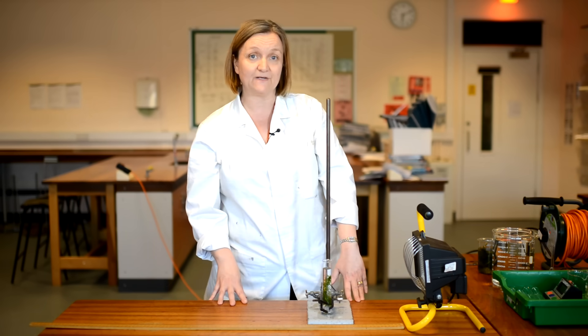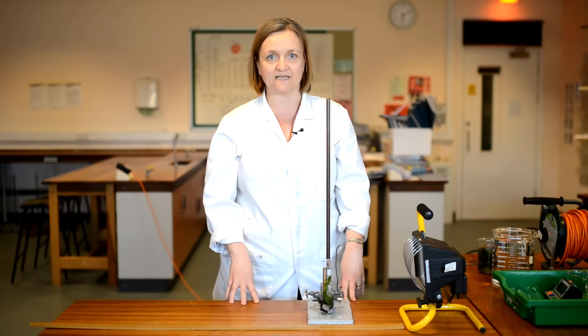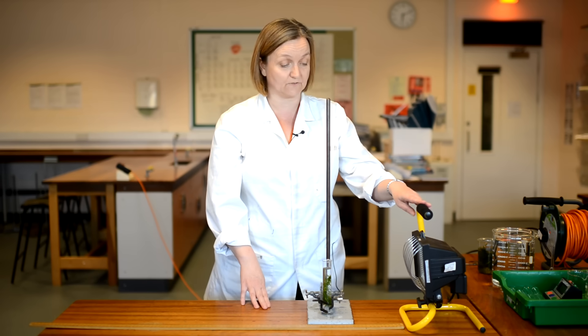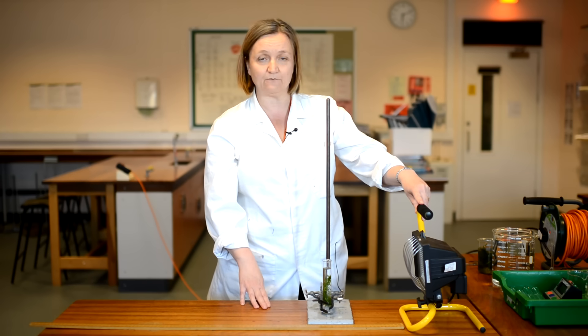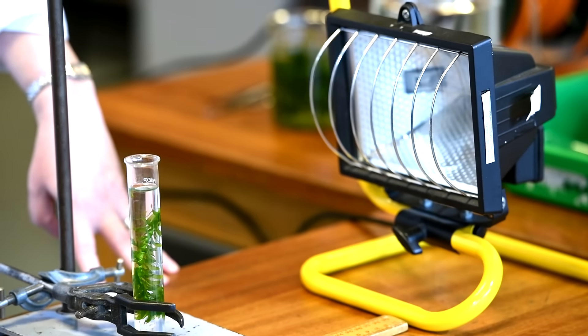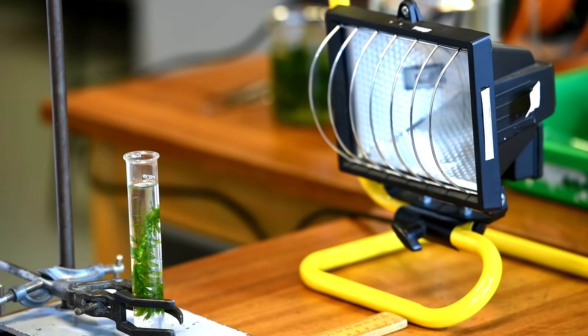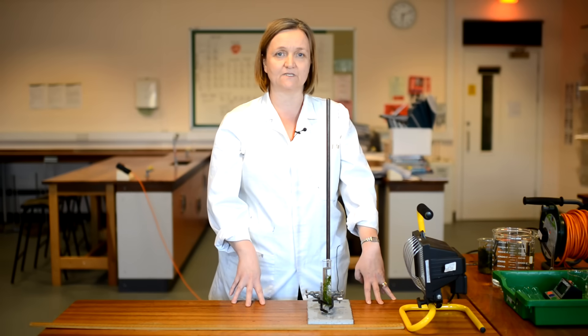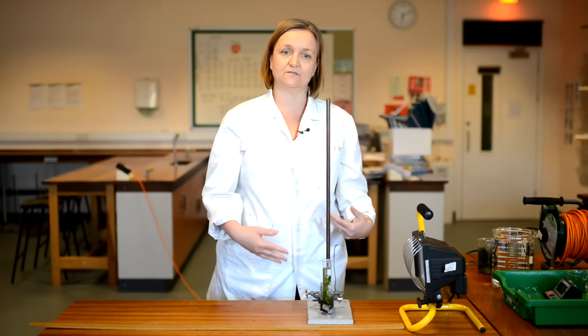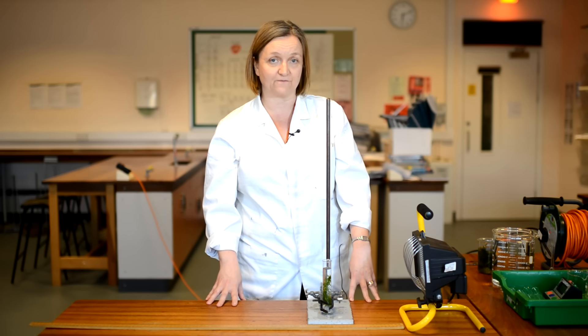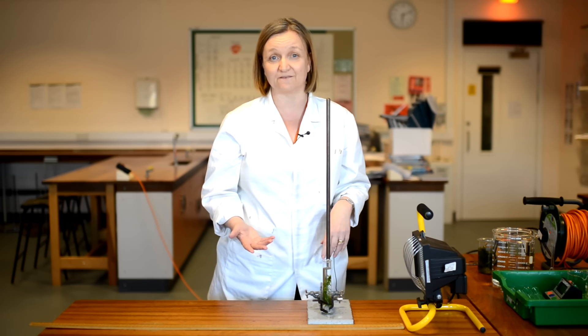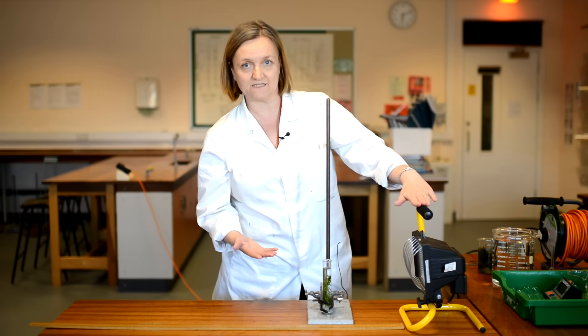So the independent variable is going to be our light intensity. And to change that, we're going to change the distance between our pond weed and our light source. Now, I'm using quite a powerful light bulb here, but actually it may be better, and you may have done this at school, to use an LED light source. This is because the LED sources don't give off very much heat energy. And, of course, because the temperature will also affect the rate of the photosynthesis, we don't want to have two variables changing at once because that would make the test unfair. But this is the one I'm using today, and so this is the one I'm going to investigate.